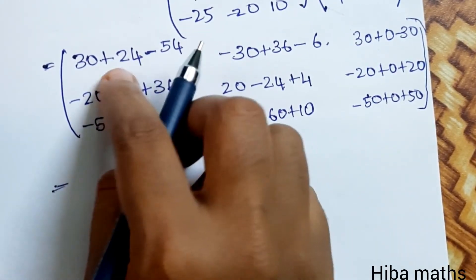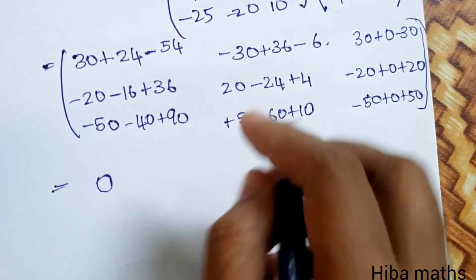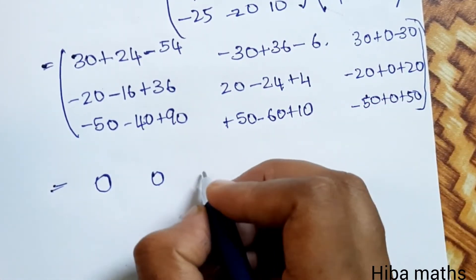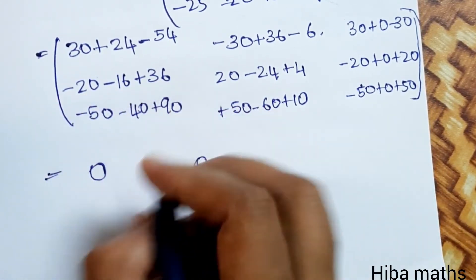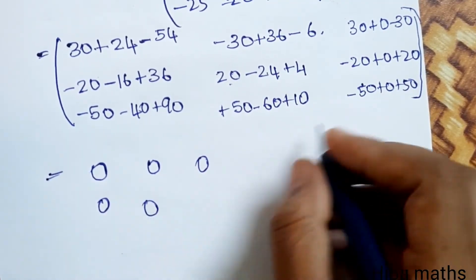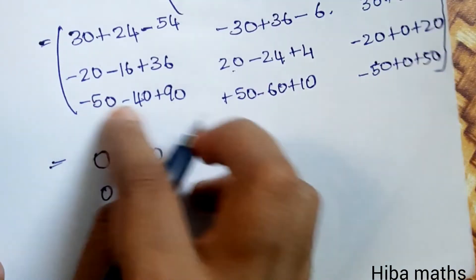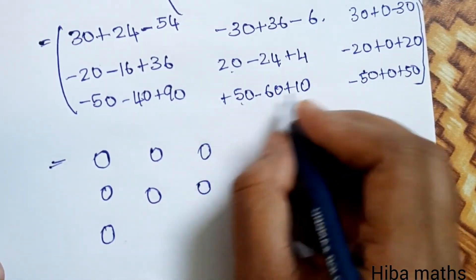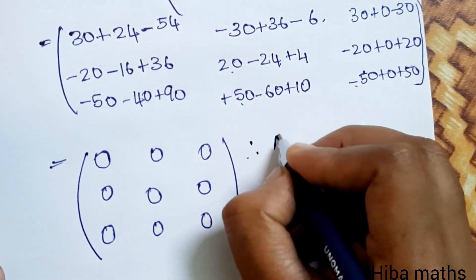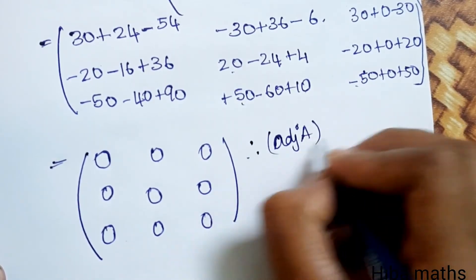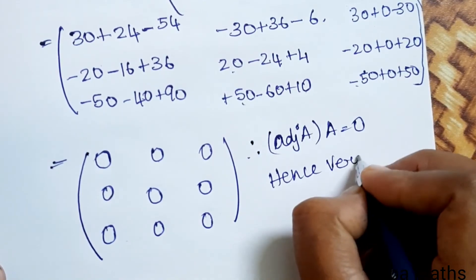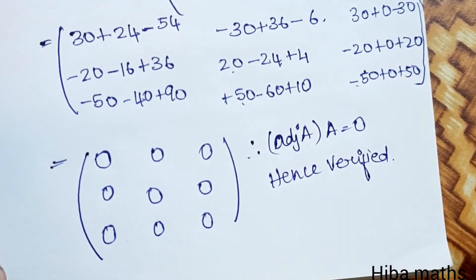Resolving: 54 minus 54 equals 0; minus 36 plus 36 equals 0; plus 30 minus 30 equals 0; minus 36 plus 36 equals 0; minus 24 plus 24 equals 0; minus 20 plus 20 equals 0; minus 90 plus 90 equals 0; 60 minus 60 equals 0; minus 50 plus 50 equals 0. Therefore, adjoint of A into A is equal to zero matrix. Hence verified. Thank you so much for watching.